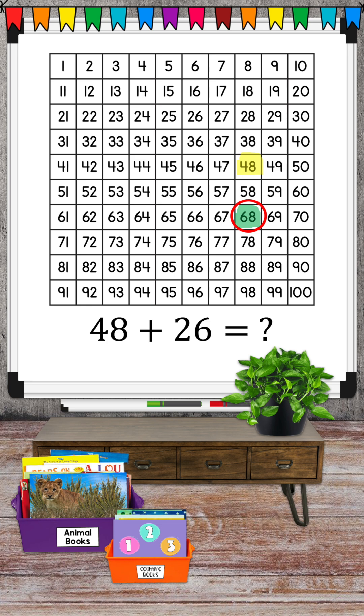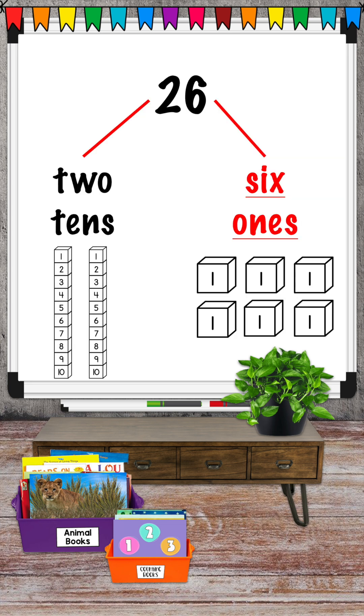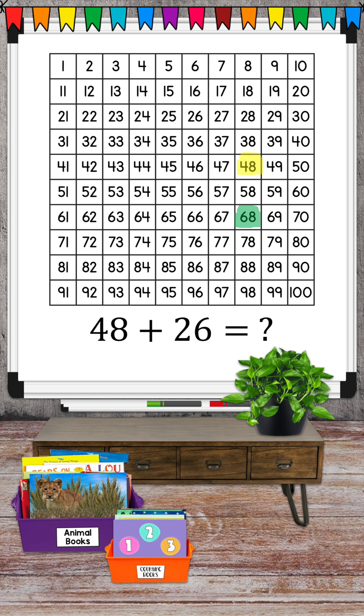Now we need to add the six from 26. Start at 68 and count six, moving to the right and down to the next line. One, two, three, four, five, six. We end at 74.